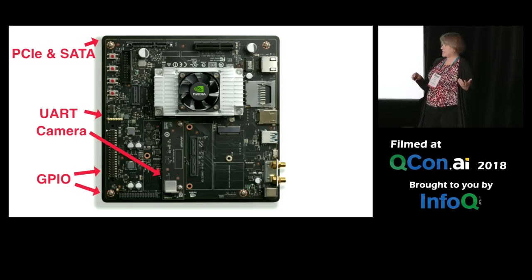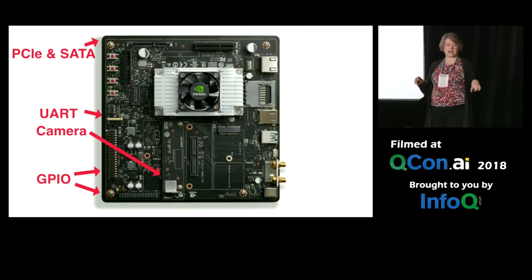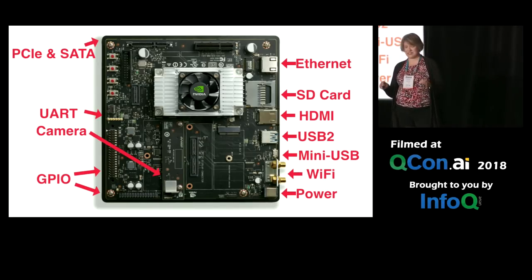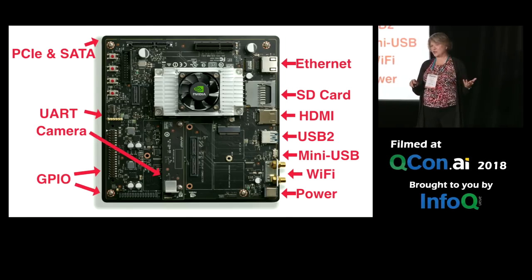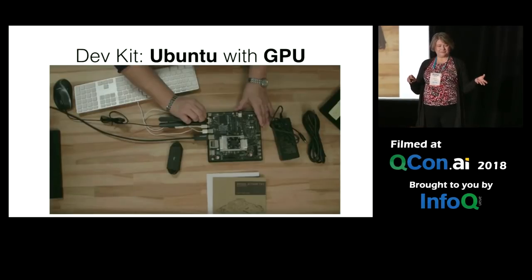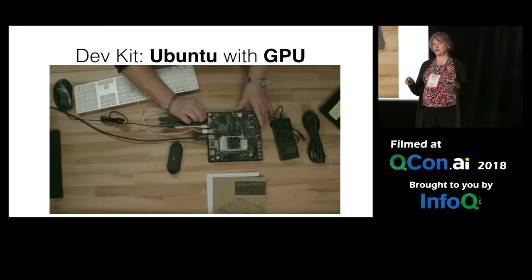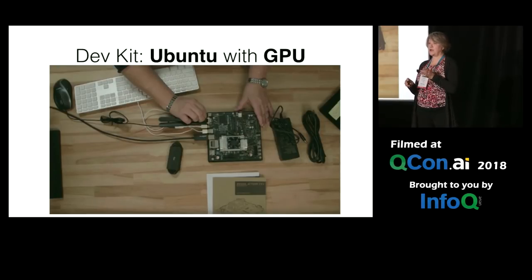You can get to the PCI SATA for a hard drive, a UART camera port, all sorts of I/O on the GPIO header, and the usual suspects you might see on a PC motherboard. This is really like a motherboard. You can access Ethernet, SD card, HDMI, USB, and Wi-Fi. Basically, you can build your development kit into a full computer — hook up a display, hook up a keyboard. All of these things run Ubuntu Linux. It has a GPU, so you've got this powerful little computer that you can actually develop on and then ideally deploy for your project and application.